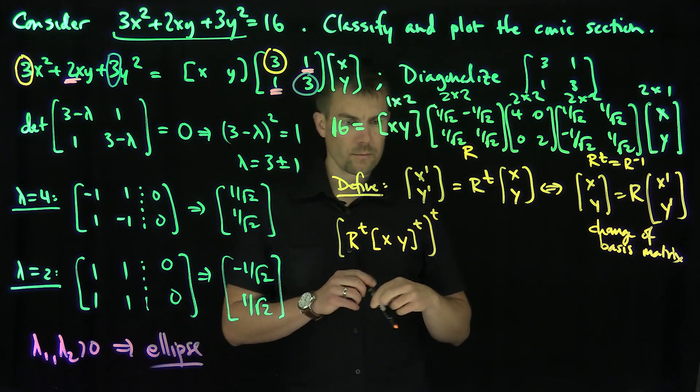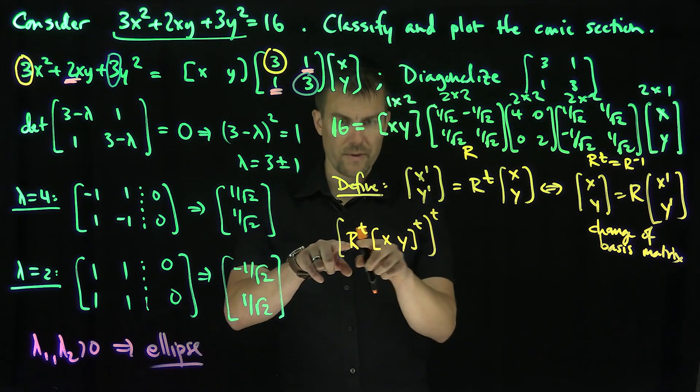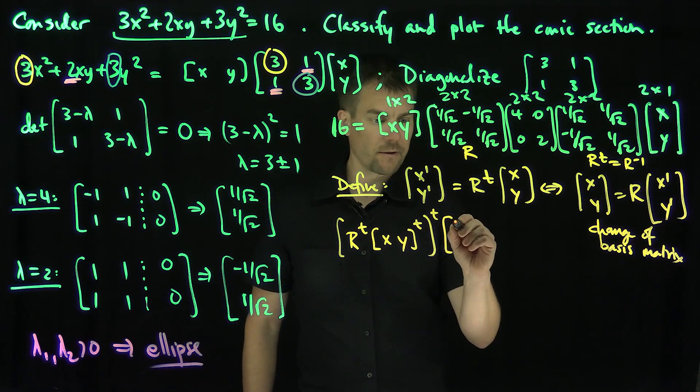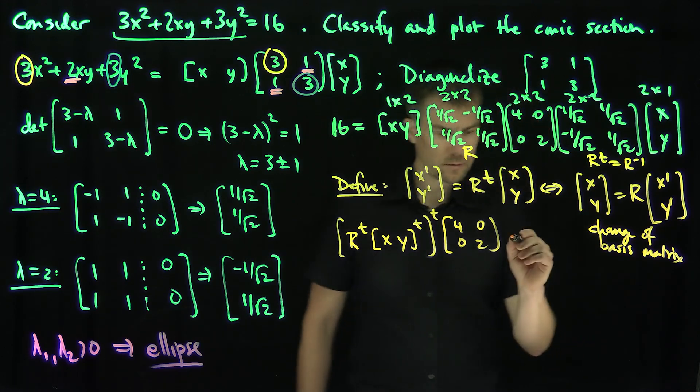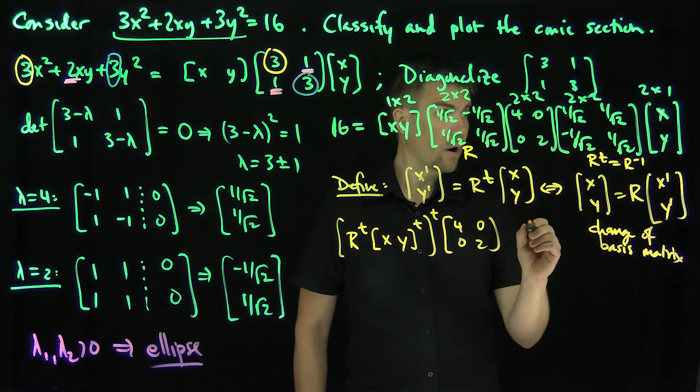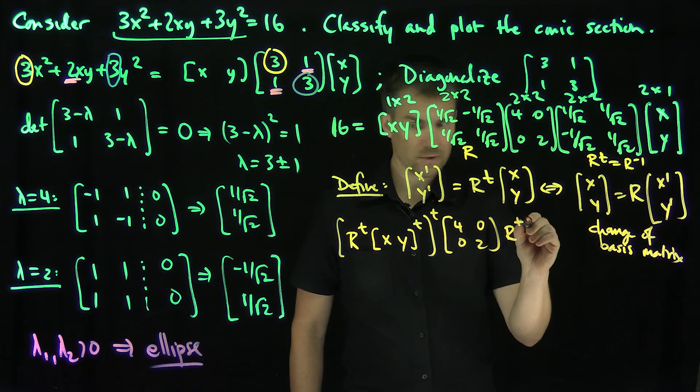Put me back into the right order. Because the transpose of this would be xy and then R, and then times what? And then times [4, 0; 0, 2], and then an R transpose, and then xy.